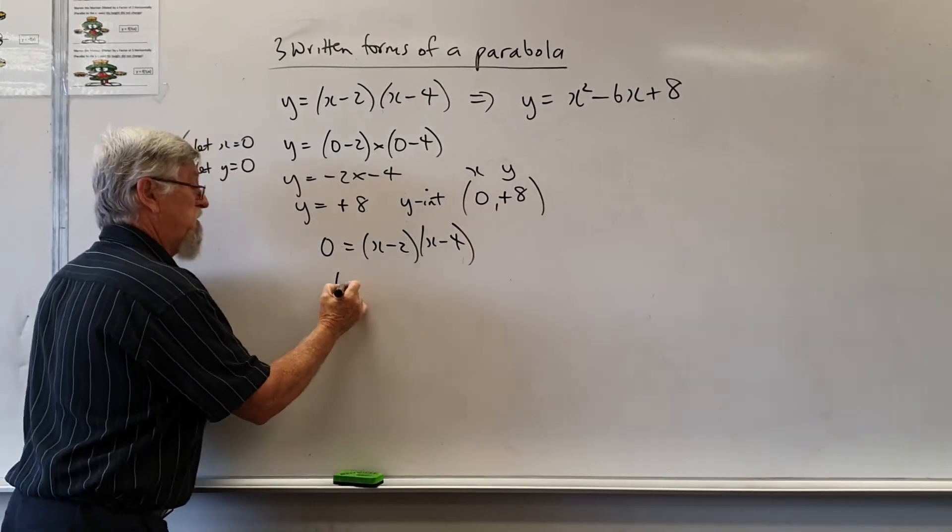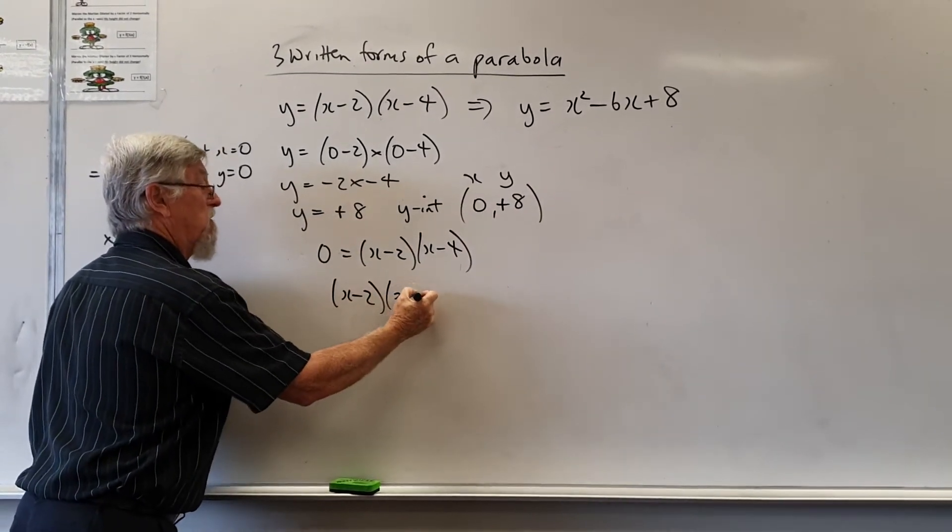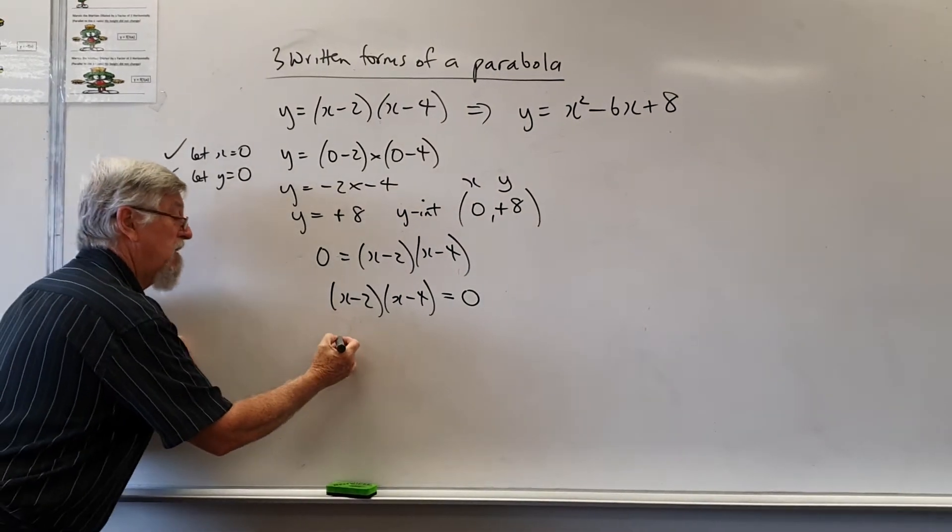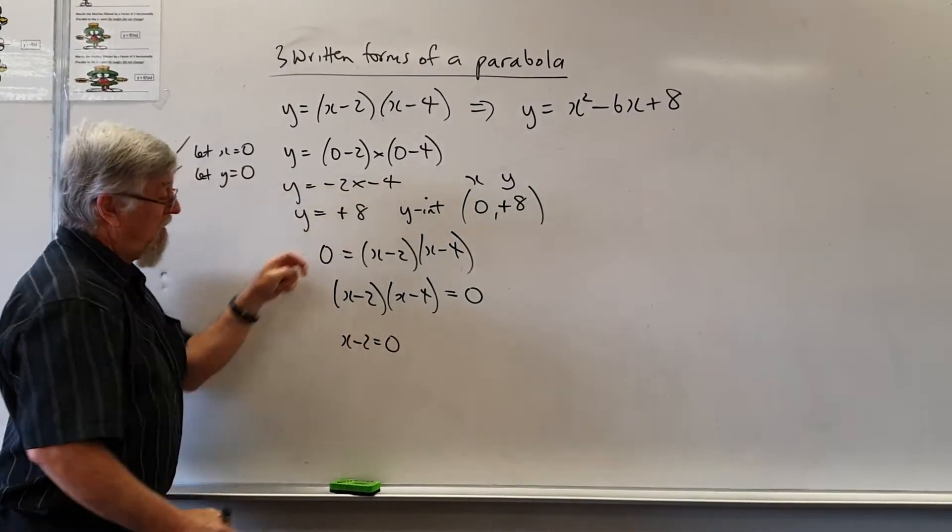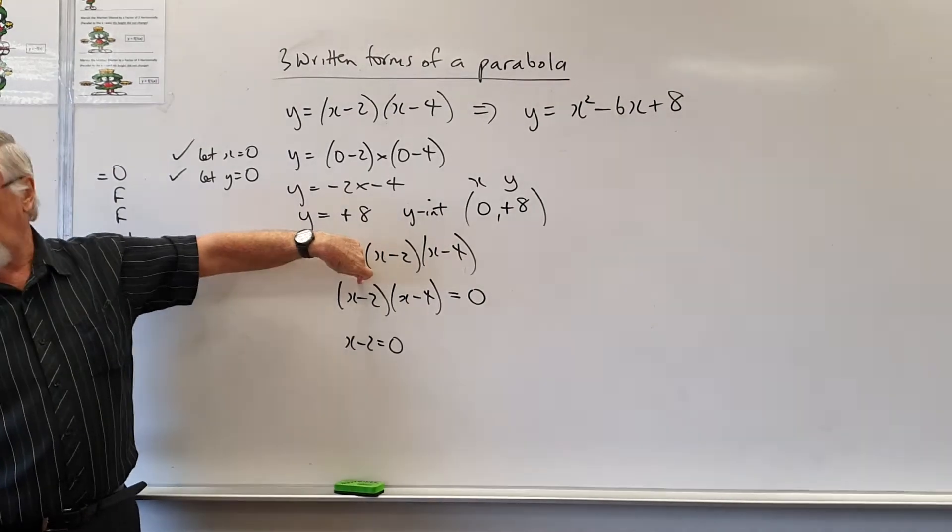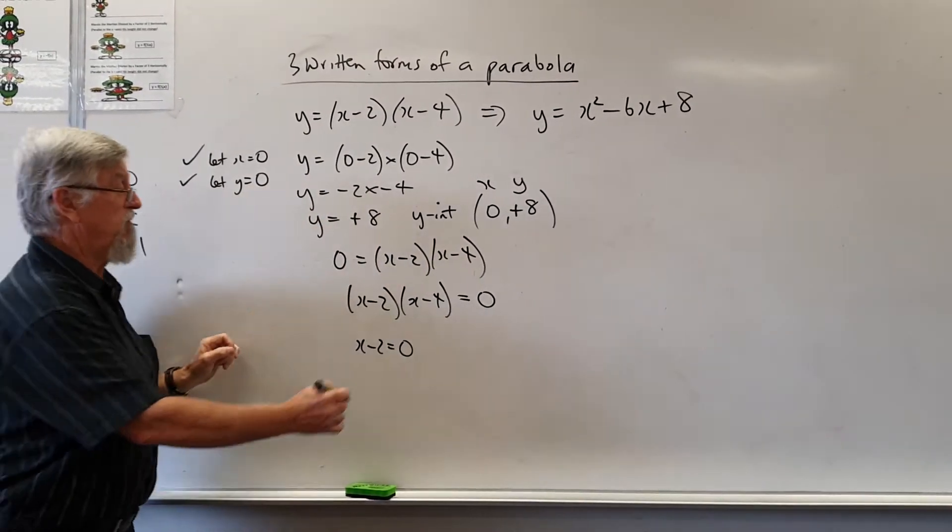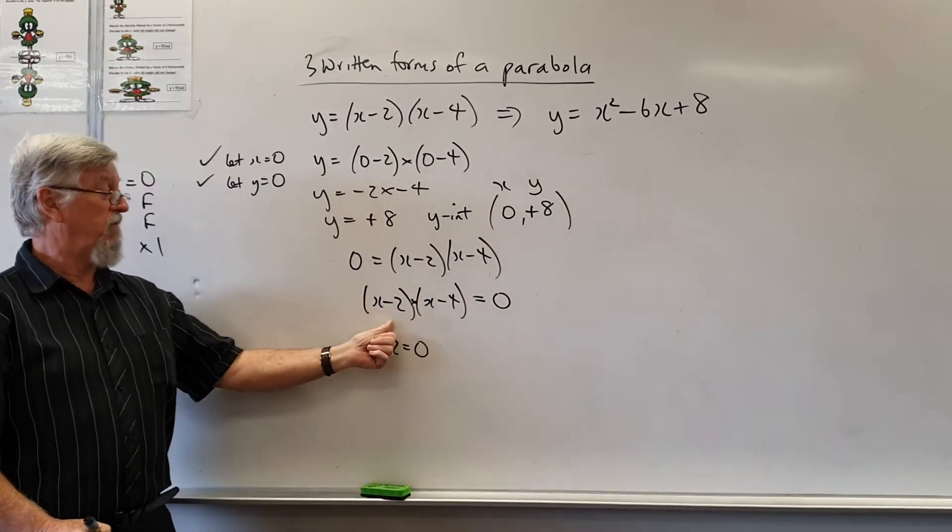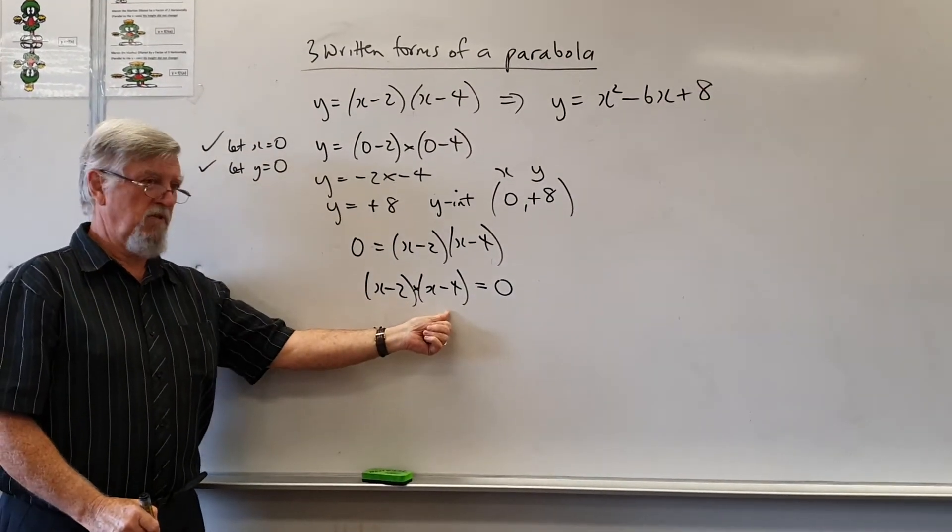So in this form if we're creatures of habit most people like to write that first. So it's equal 0. And now we can let x minus 2 equal 0. Why can we let that equal 0? Why do we want to let that equal 0? When you multiply two numbers that get 0 either the first one has to be 0 or the second one has to be 0.